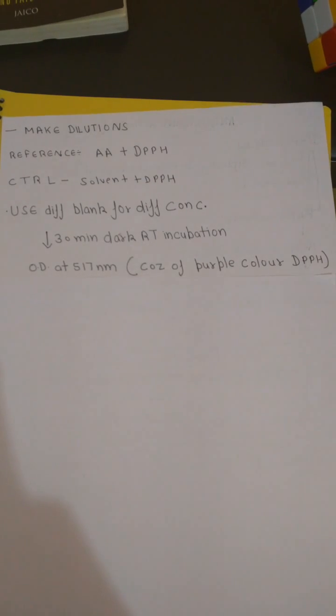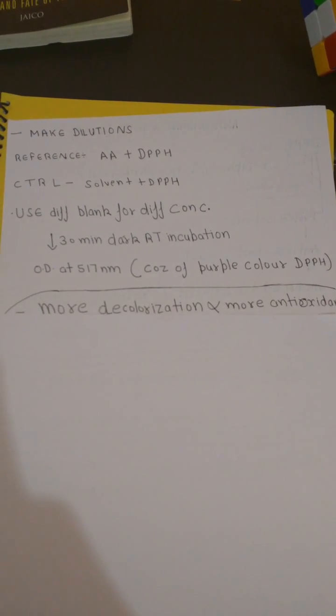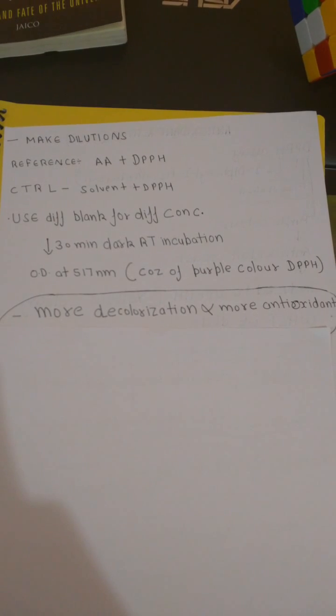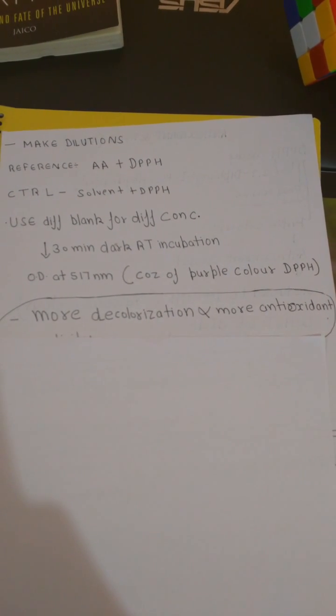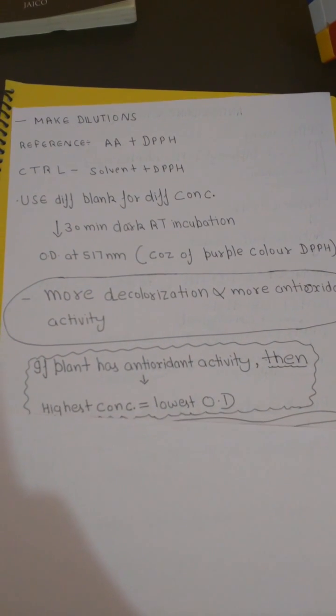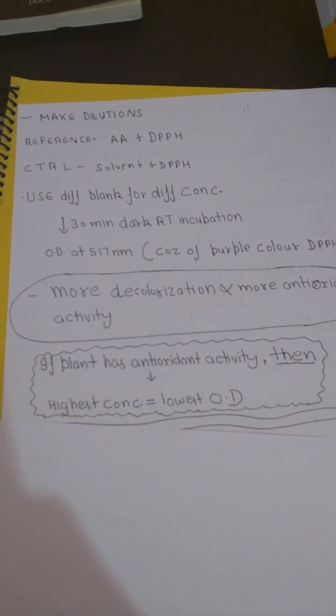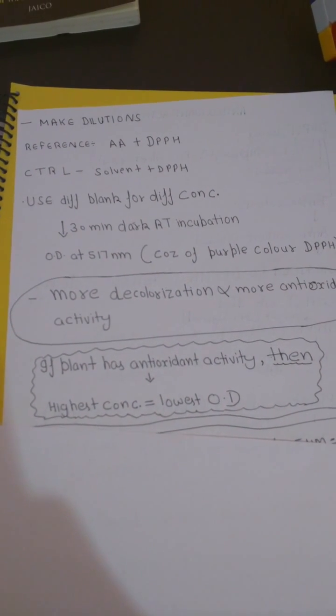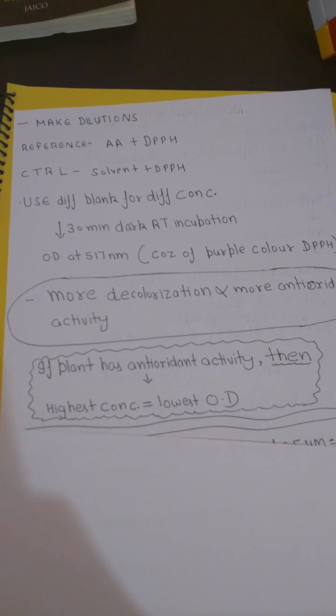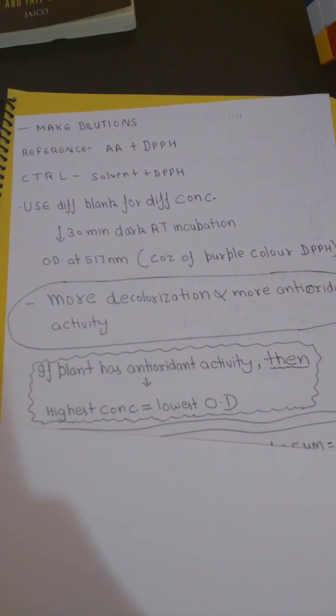The OD that comes will be because of the purple color of the DPPH. The more your purple color will be converted into yellow color DPPHH, the more will be the antioxidant activity of your plant extract. If plant has antioxidant activity, then that means the highest concentration will be having the lowest OD.